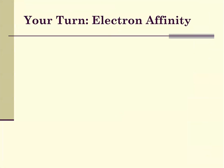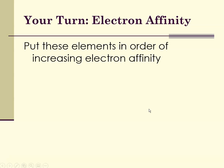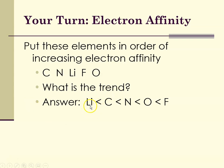Now here are our trends again, and this time we're asked to look at electron affinity. Electron affinity is increasing from left to right and decreasing from top to bottom. Put these elements in order of increasing electron affinity: carbon, nitrogen, lithium, fluorine, and oxygen. Again, they're all in the same period. From left to right it increases, and we're asked for increasing order. So we're going to start at the left and move across to the right — increasing electron affinity would be lithium, carbon, nitrogen, oxygen, with fluorine being the greatest.